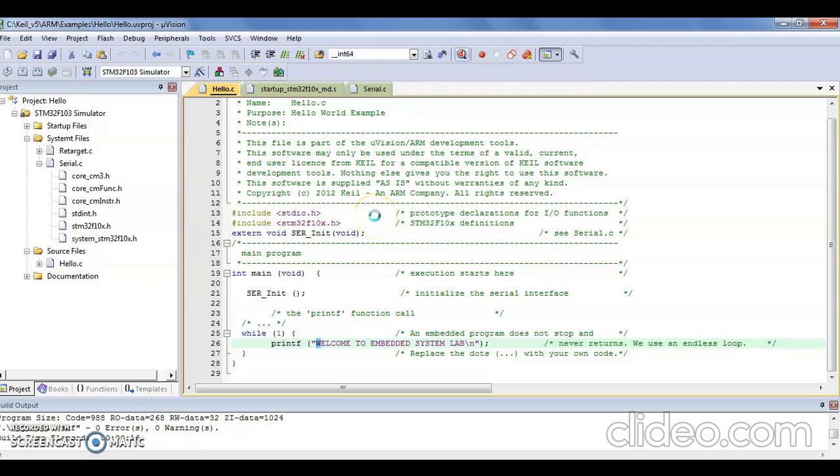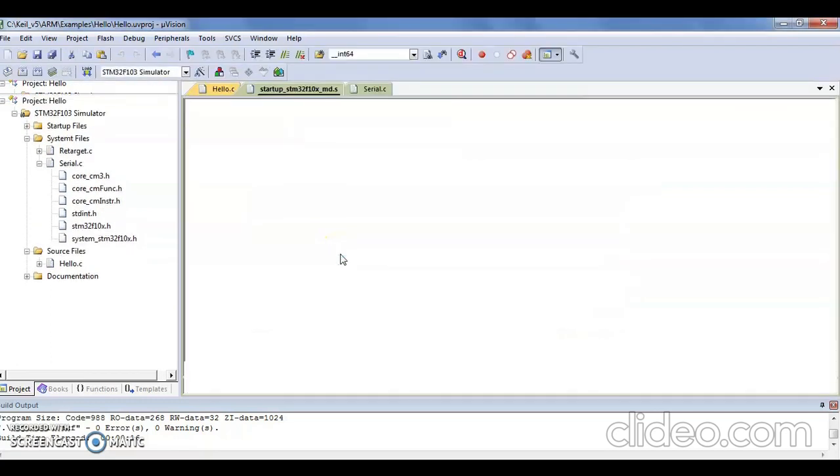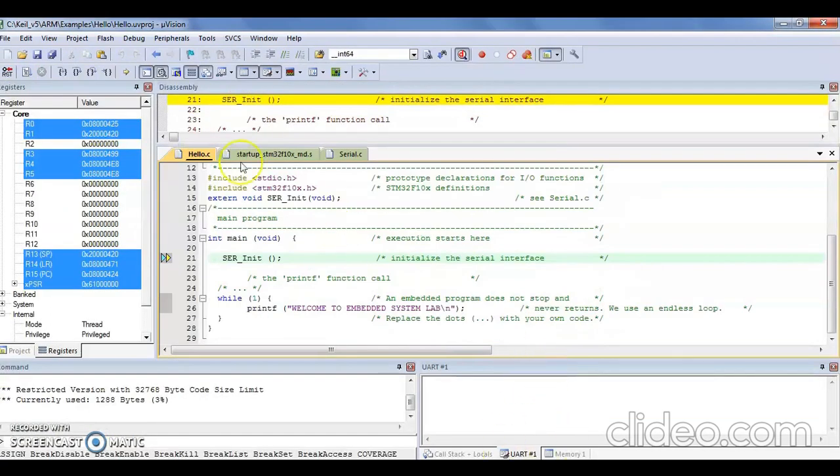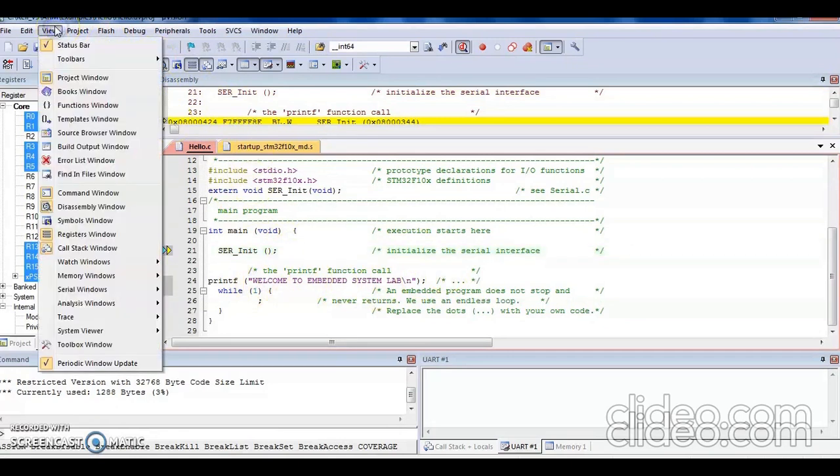Once you run the debug, now you can see all the memory and serial windows opening, which shows all the registers containing different addresses. I want to see the message I have transferred to the serial window of UART. Go to View, then go to Serial Windows, and select UART1.